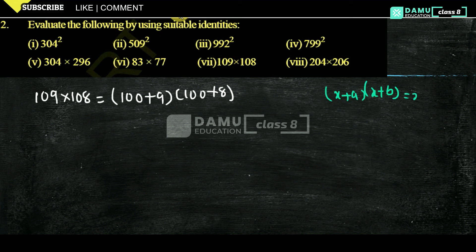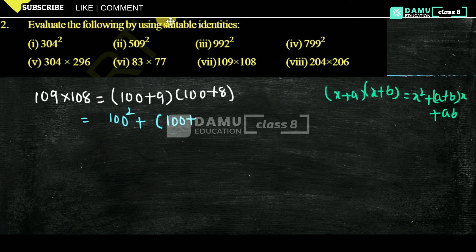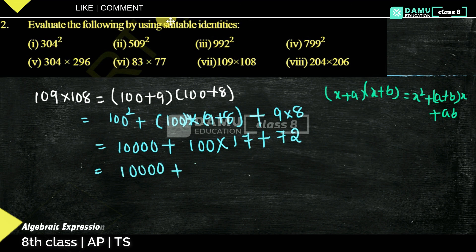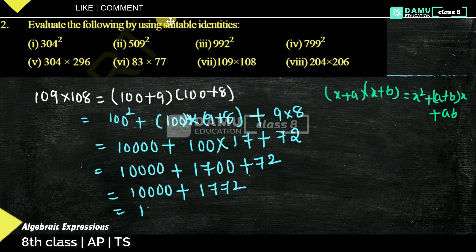That will be equal to x² plus (a+b) into x plus ab. In that format, x is 100 here. So: 100² plus (9 plus 8) into 100 plus 9 into 8. That is 10,000 plus 17 into 100 plus 72. So 10,000 plus 1,700 plus 72 equals 10,000 plus 1,772, which gives 11,772.